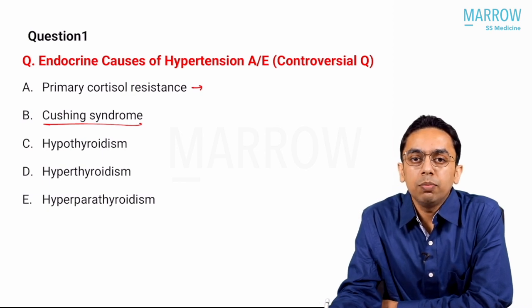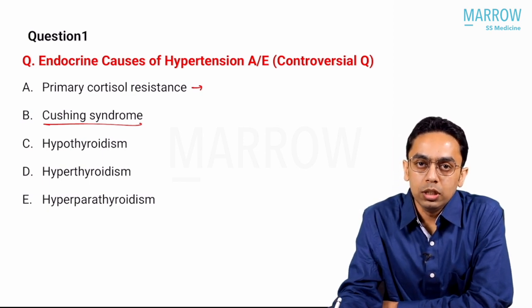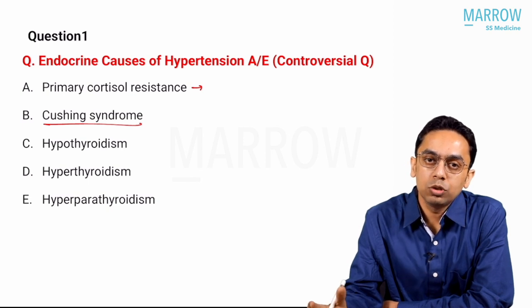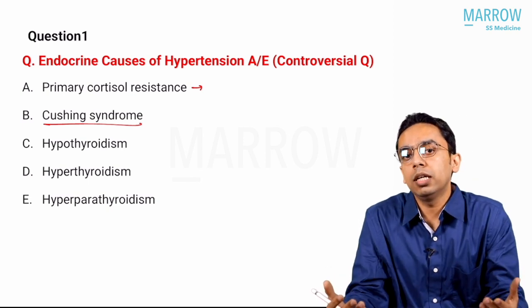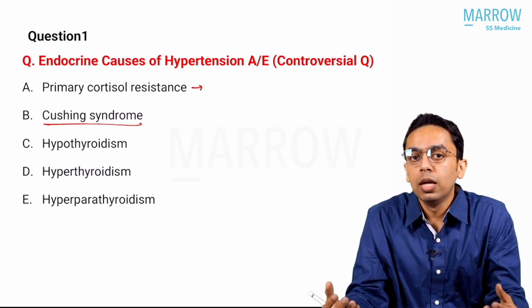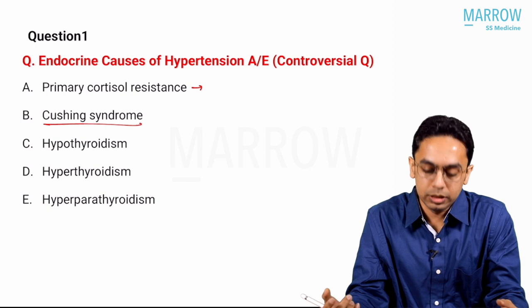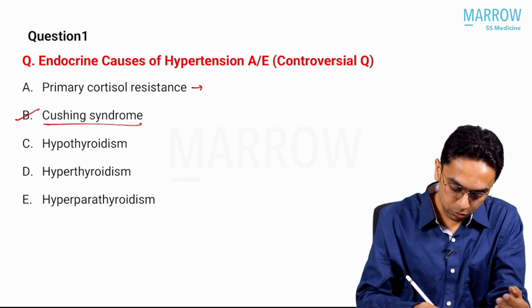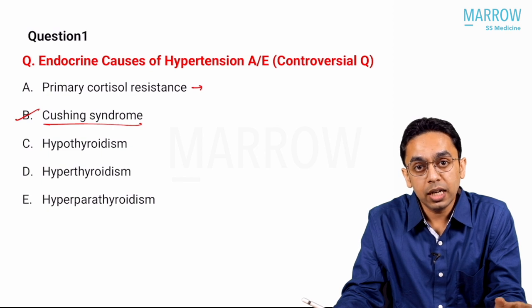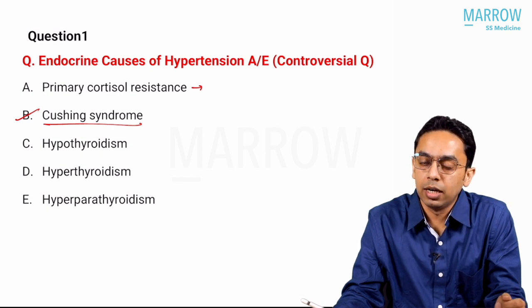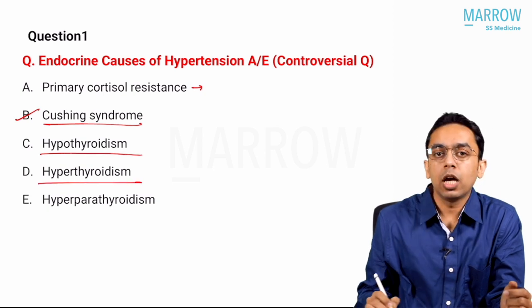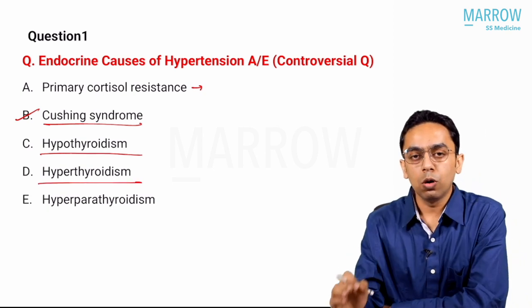Cushing syndrome — when there is increased cortisol, 11-beta HSD2 is overwhelmed and cannot convert cortisol to cortisone adequately, so cortisol acts on the mineralocorticoid receptor. Cushing syndrome is obviously a cause of hypertension, in both ACTH-dependent as well as ACTH-independent cases.